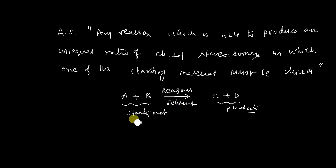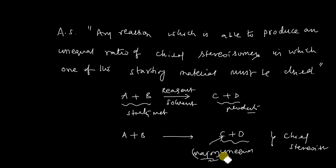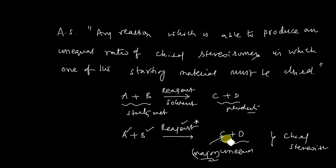Coming to asymmetric synthesis: this should produce an unequal ratio of chiral stereoisomers. It has to produce any number of chiral stereoisomers, but one of the chiral stereoisomers must be exclusive — that is, the major product. To achieve this, one of the starting materials must be chiral — either substrate A or the reagent. If the reagent is chiral or your substrate is chiral, then you will get an unequal ratio of chiral stereoisomers. That is called asymmetric synthesis.